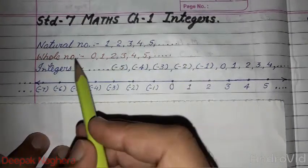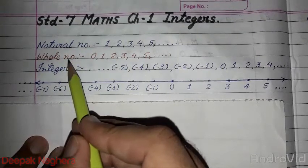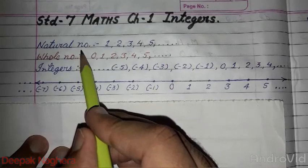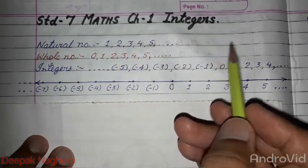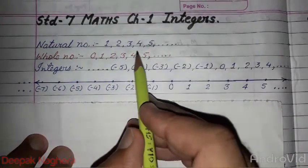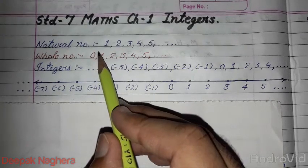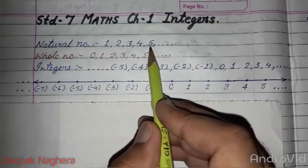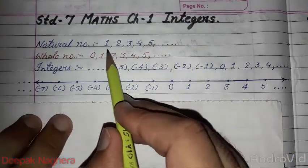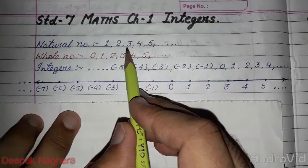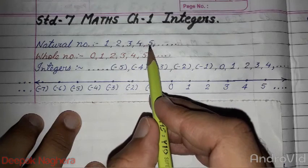So before understanding something more about integers, first of all we should know basically about natural numbers and whole numbers. We all know that natural numbers start from 1, 2, 3, 4, 5, 6, 7, 8, 9, 10, and infinite numbers are there. The smallest natural number is 1, but there is no greatest natural number because numbers never end.